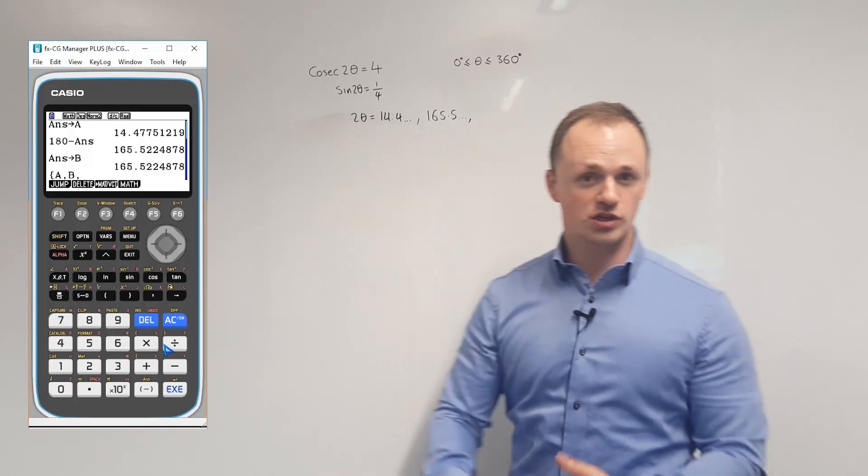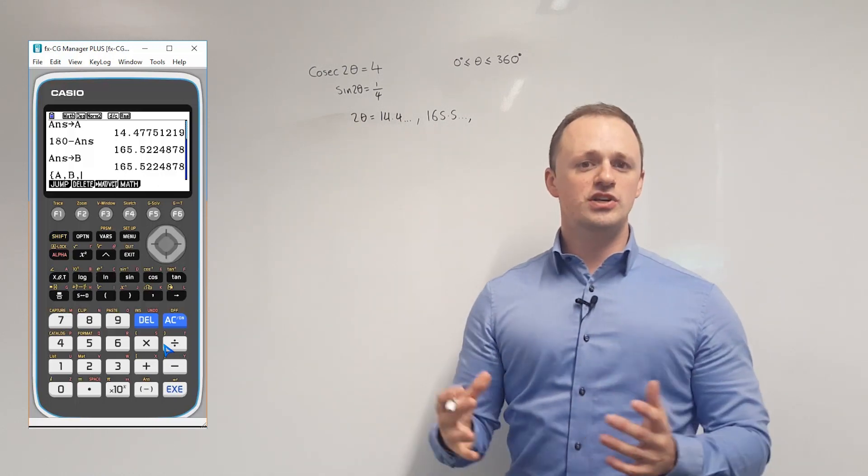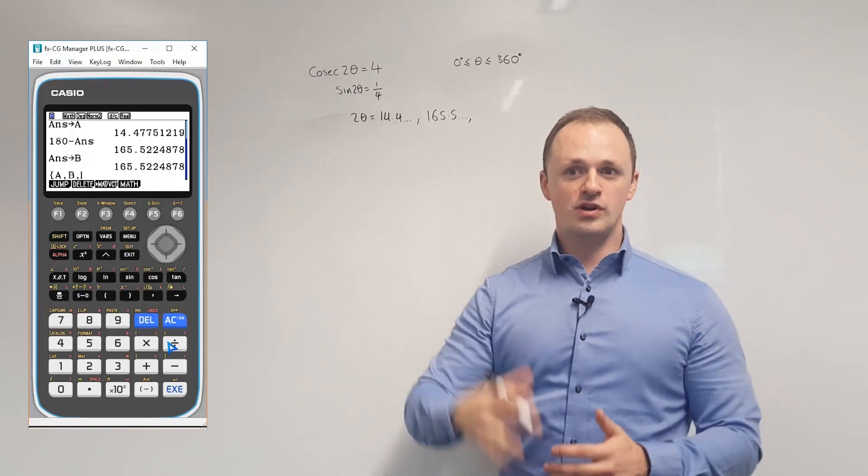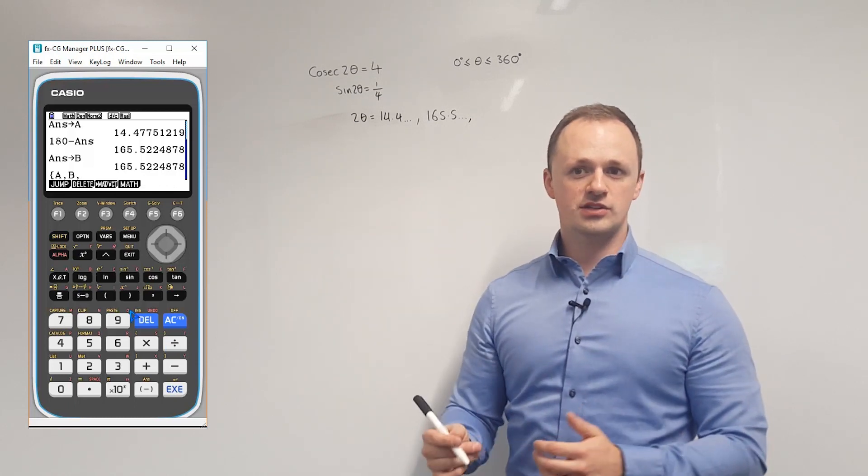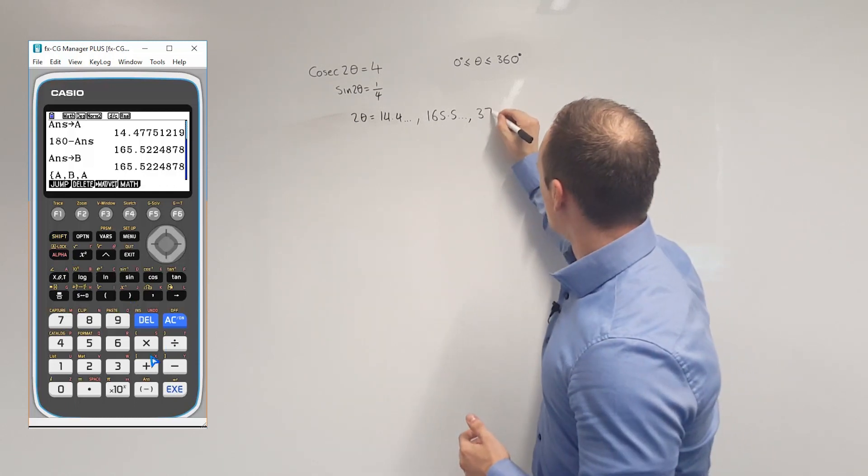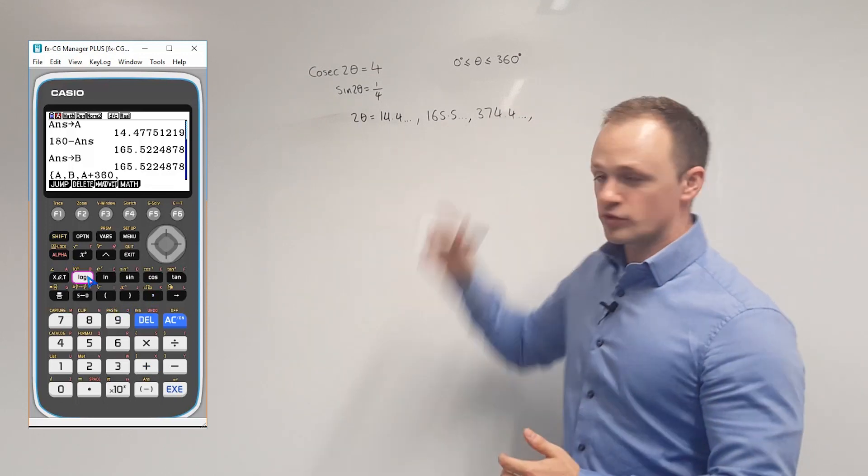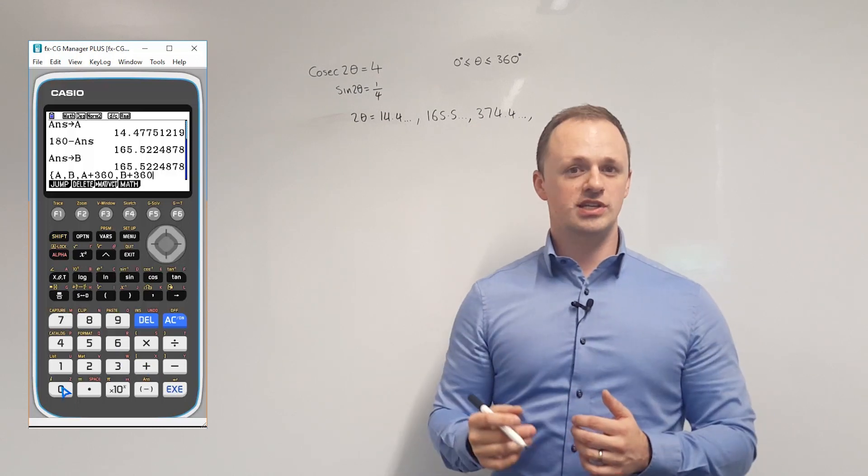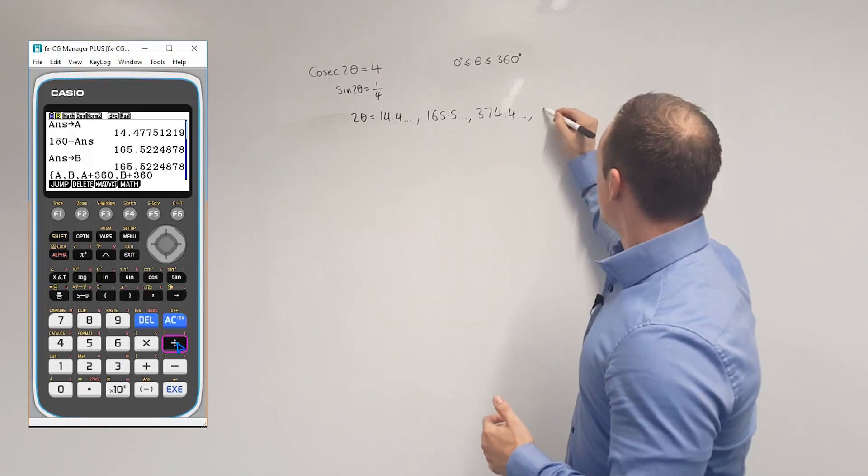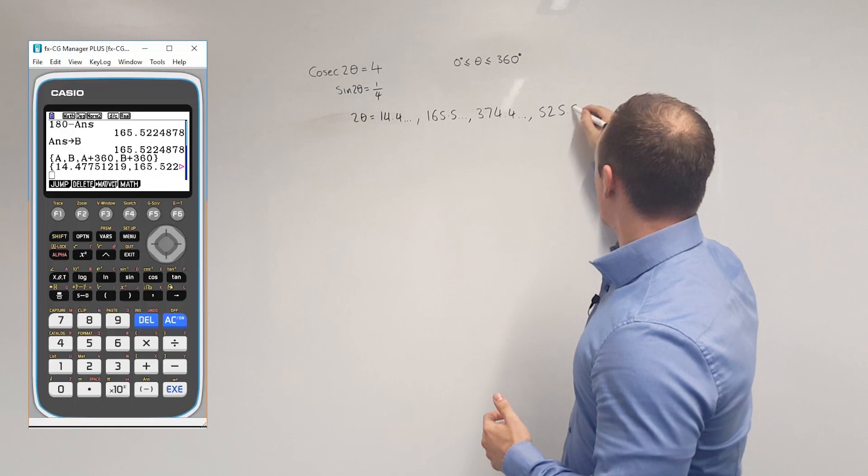So we'd expect to see two more solutions on top of these two. So first of all, we'll start with the 14.4, add on 360, and that's going to give us 374.4. Then we'll take the 165.5 degrees, we'll add 360 onto that, and that's going to give us 525.5.